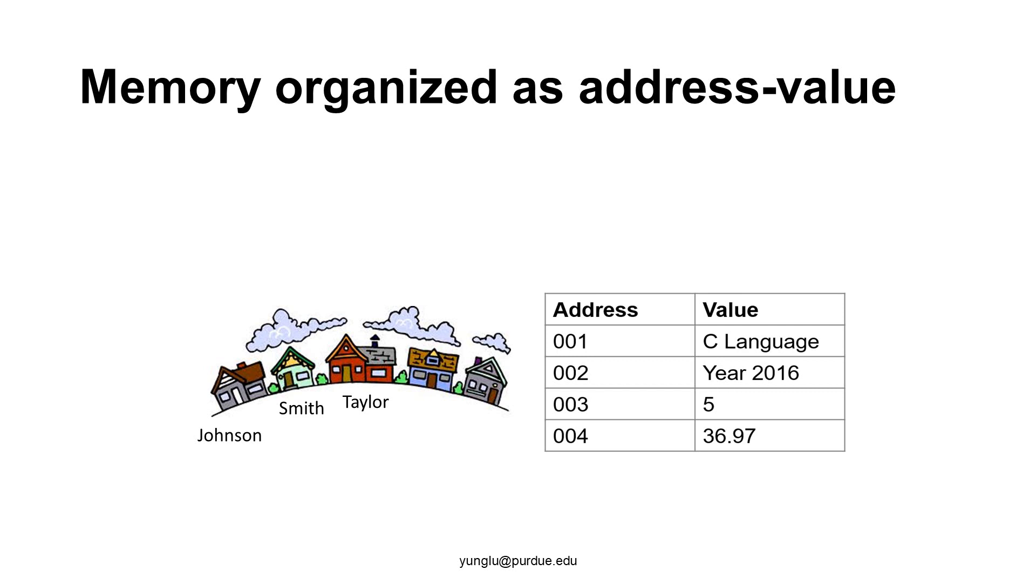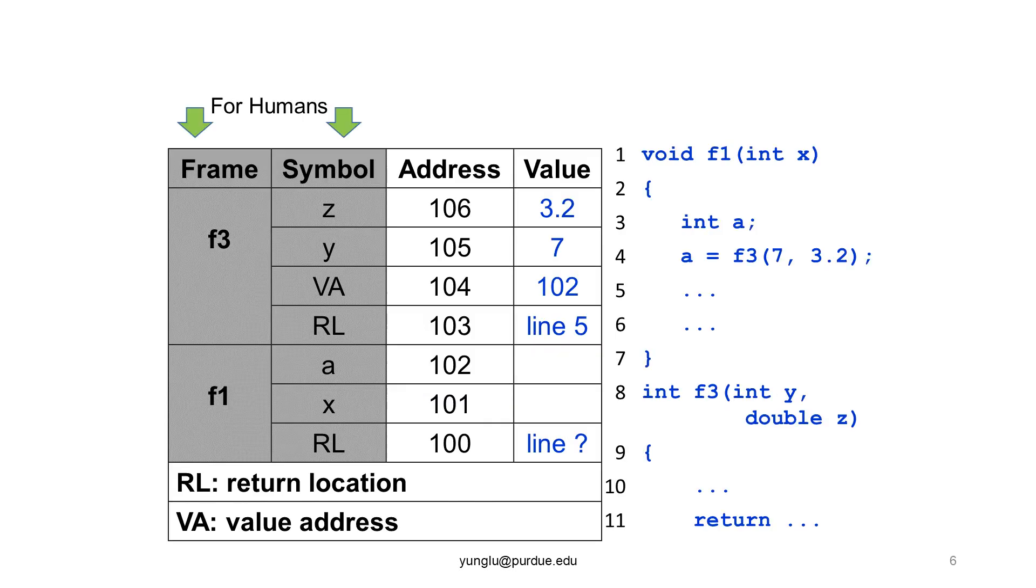In stack memory, the first column is the frame. Each function has its own frame. Consider the frame of F3 in this example. Function F3 is called by F1 at line 4, so the return location is line 5. The value returned from F3 is written to a, so the value address is the address of a.